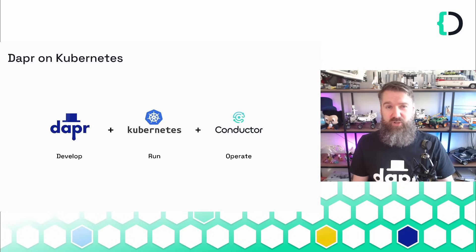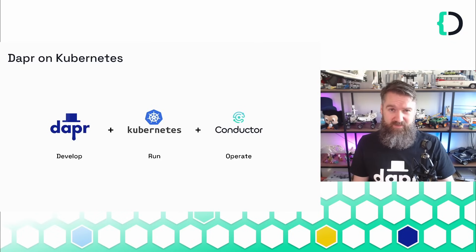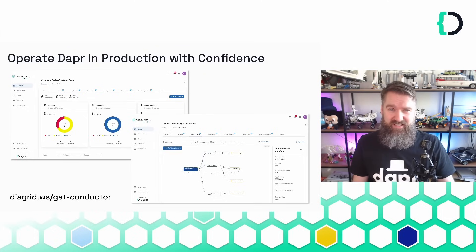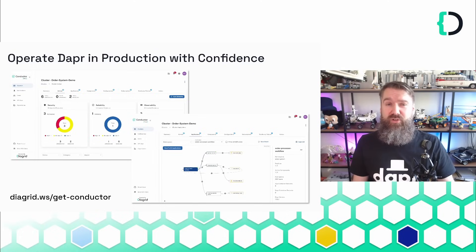This is where Diagrid Conductor can help out. Conductor is a service that automates many operational tasks when running Dapr applications at scale on Kubernetes. You can upgrade or downgrade all Dapr sidecars with zero downtime, schedule root certificate rotation for your clusters, and get insights and recommendations regarding security, reliability, and performance. There's a free version you can get at diagrid.io/get-conductor.